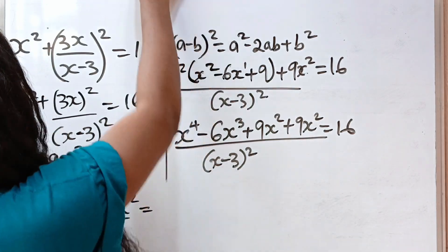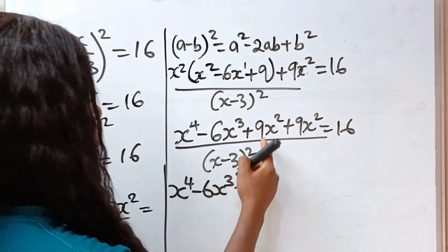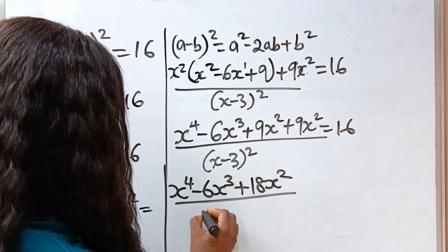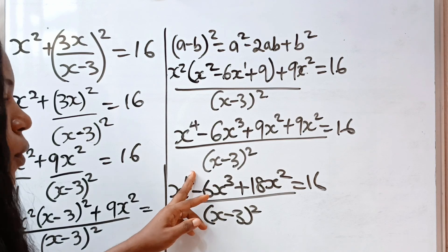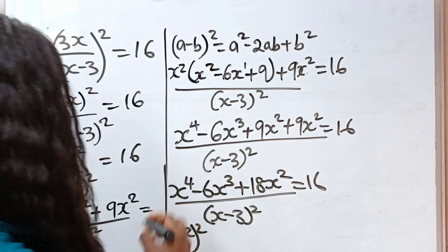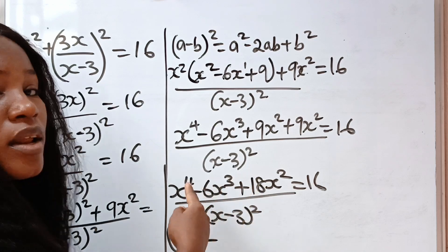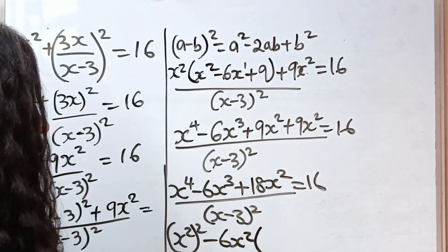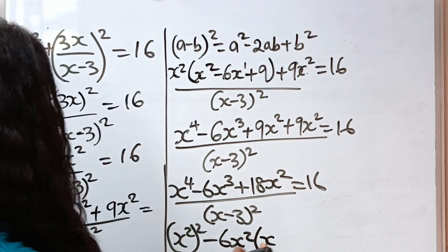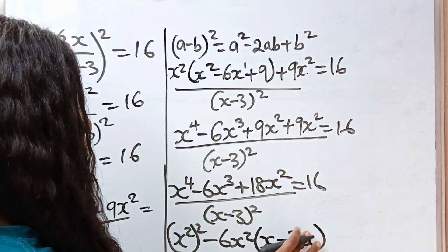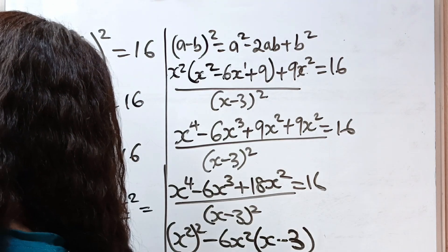Continuing: we have x to the power of 4 minus 6x to the power of 3, and combining 9x² plus 9x² gives 18x squared, all divided by x minus 3 squared, equal to 16. Now x to the power of 4 can be factorized as x squared raised to the power of 2. This and this have 6x squared in common, so we factor out minus 6x squared bracket x minus 3, leaving minus 3, divided by x minus 3 squared, equal to 16.